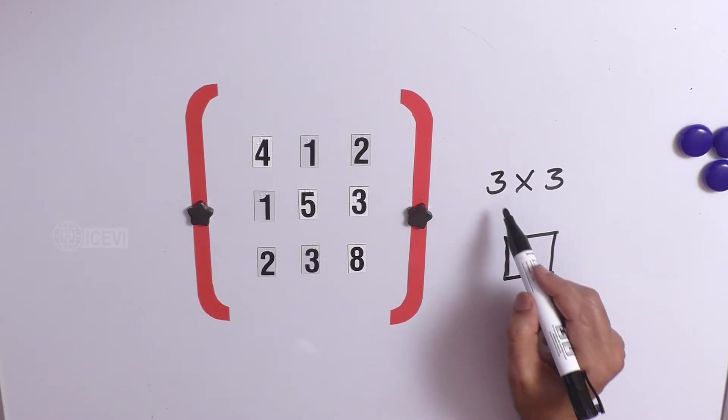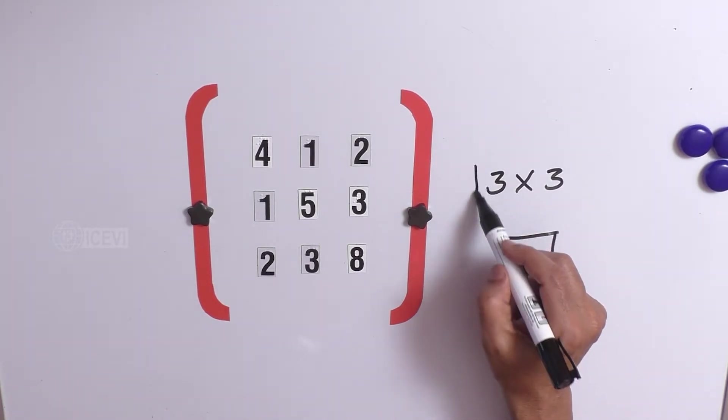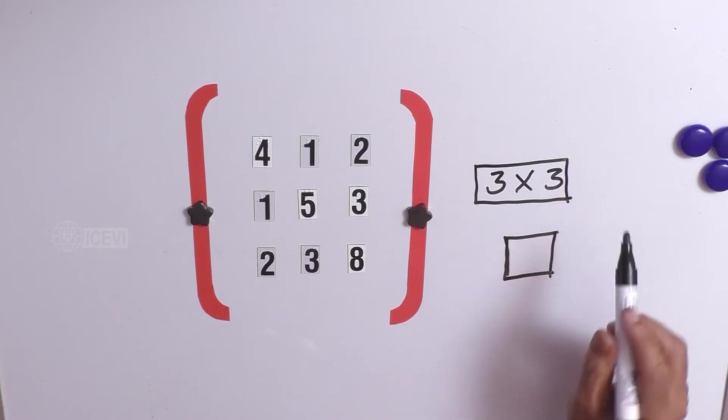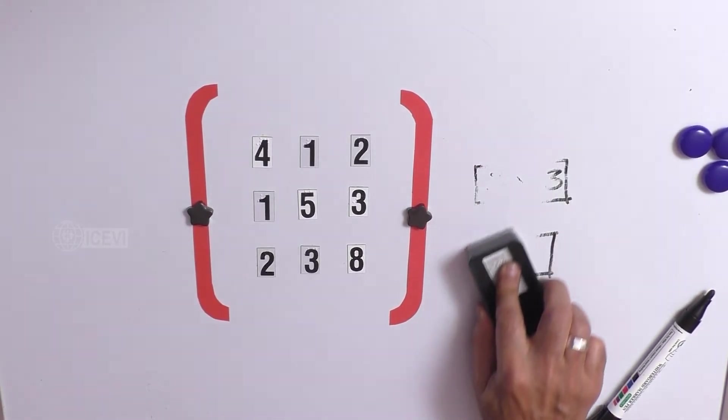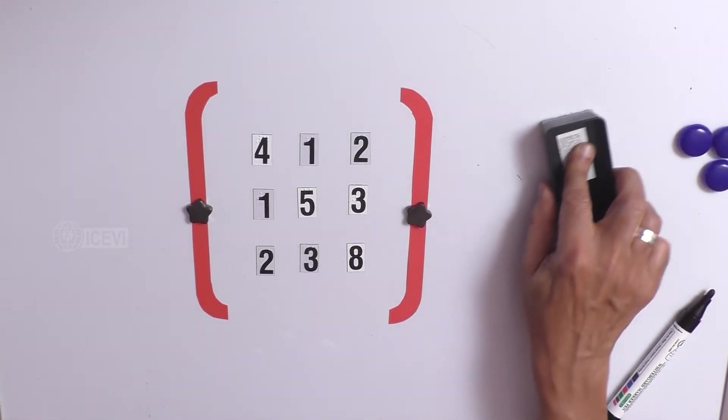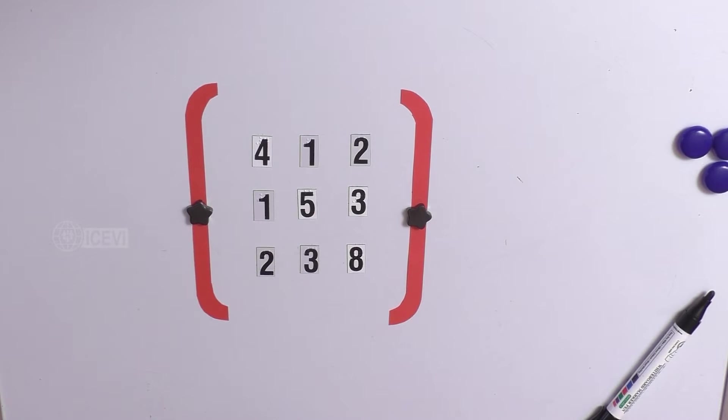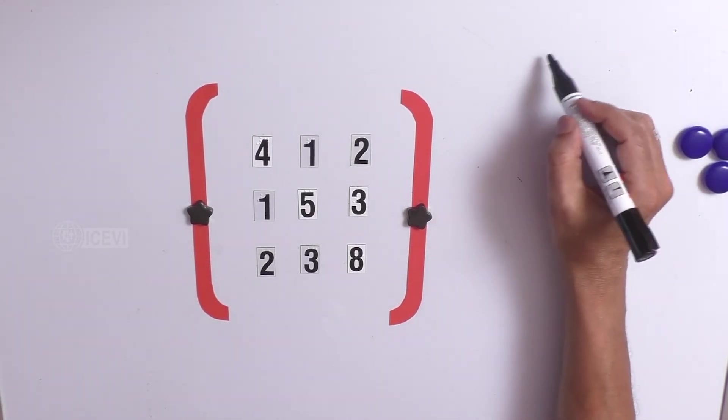That means it has equal number of rows and columns. Equal number of rows and columns. So, this type of matrix is called as a square matrix. This type of matrix is called as a square matrix.